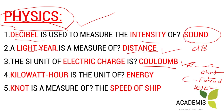The kilowatt-hour is the unit of energy. The electricity meter measures consumption in kilowatt-hours. The electricity meter actually measures the kilowatt-hour reading — whatever number you see on your electricity meter is measuring electrical energy in kilowatt-hours. So kilowatt-hour is the unit of energy.